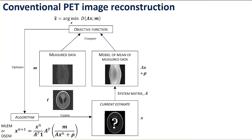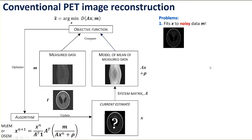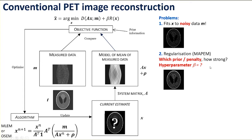There are issues that arise with this conventional framework. For example, vector X is being fitted in general to noisy data M. To compensate for that with conventional techniques, we would use regularisation strategies such as MAP EM — maximum a posteriori — where we build in prior information about what we believe this radiotracer distribution would look like. Conventionally this is often a very simple prior probability or penalty function, which is a problem because we don't know what kind of prior to use and often it is way too simplified.